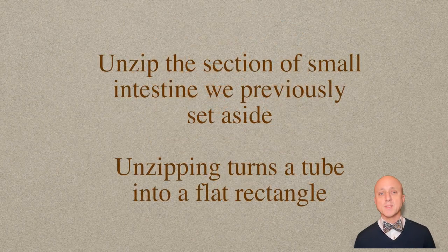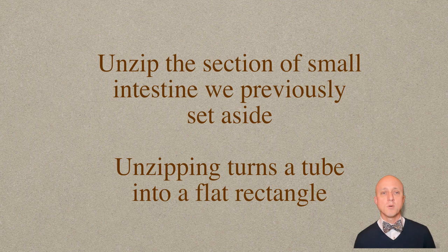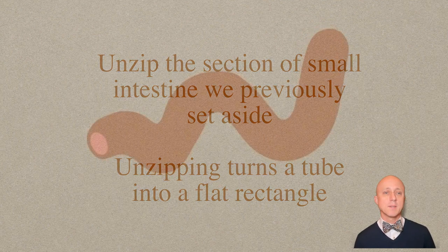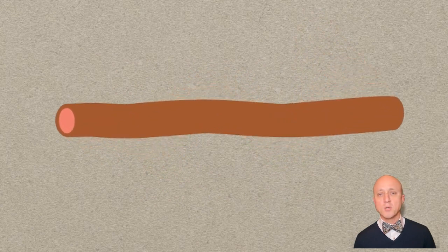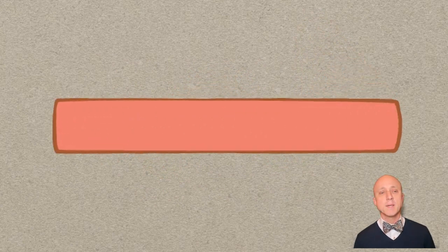Next, we unzip the section of small intestine we previously set aside. Unzipping this turns a tube into a flat rectangle that we can use for the augment. Here, we see the brown tubular intestine being opened up to reveal the rectangular pink inner surface.